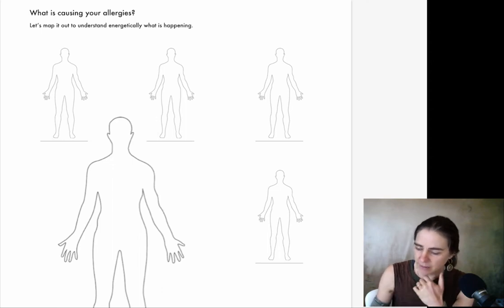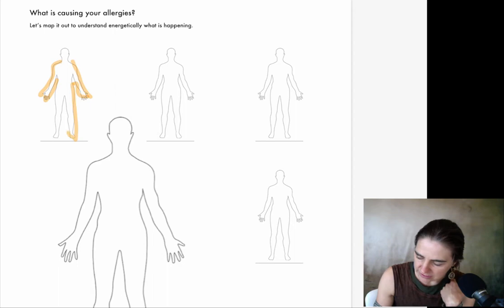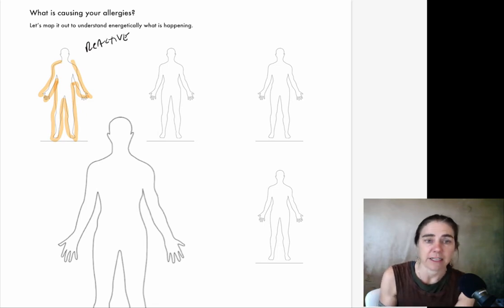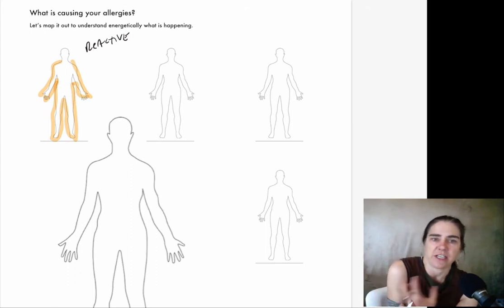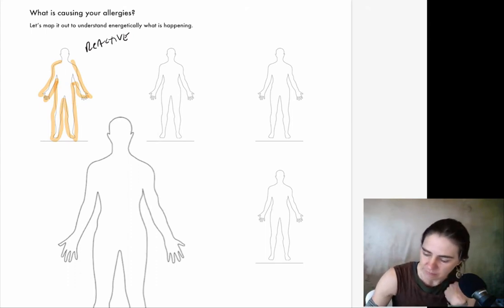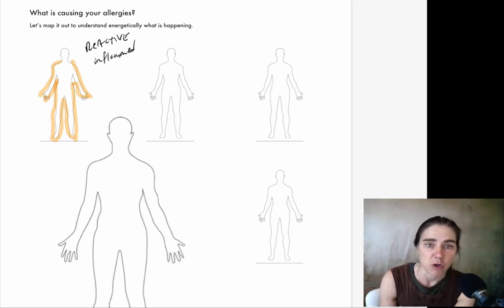So the first thing I want to talk about, and I have these bodies so that I can draw on them, is the different types of allergies. Some people have allergies in their skin. There's a reactivity that happens in their skin. Even if you look at things like poison ivy or a bug bite where your skin gets really hyper-inflamed, I would include this in an aggravated immune response.